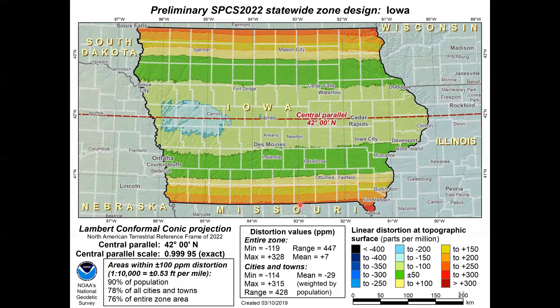The example we're using is Iowa, a state that will have multiple zones — we already know what Iowa wants. Right now they have a statewide zone designed by NGS — at least a preliminary version. The colors on the map correspond to the legend: green is plus or minus 50 parts per million distortion, roughly a quarter of a foot per mile. The colors show distortion increasing toward or away from the center of the state. It's a Lambert Conformal Conic zone showing distortion for the statewide zone.